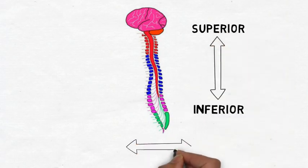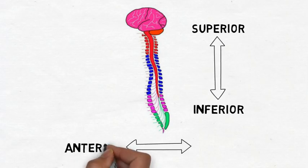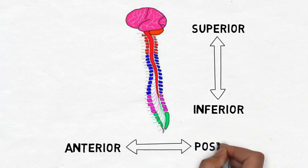Likewise, anterior always refers to the front of the body or the brain, while posterior always refers to the back of the body or the brain.